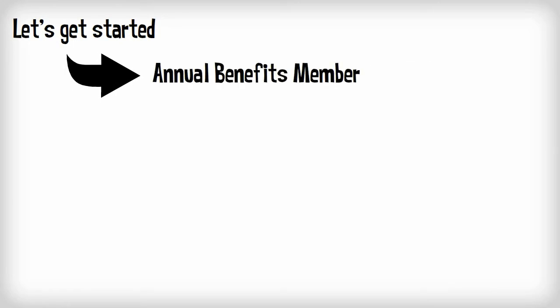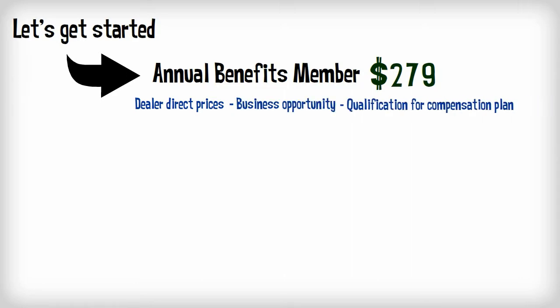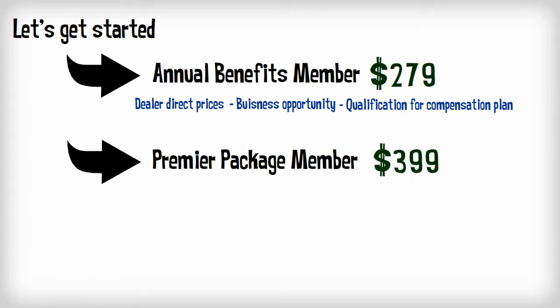There are two options to get started. Number one, you can become an annual benefits member for the $279 membership fee. This gives you access to our dealer direct prices on coins, enrolls you in the business opportunity, and qualifies you to earn in a compensation plan. Number two, you can come on board as a premier package member for $399. That includes everything in the annual benefits membership and you will receive your first premium graded, museum quality silver coin.